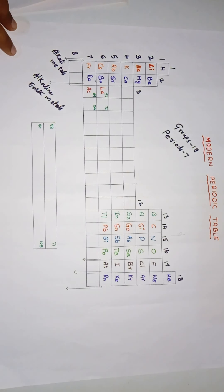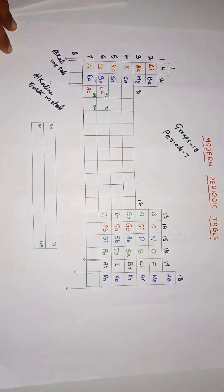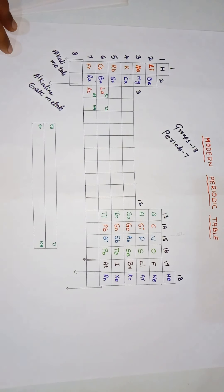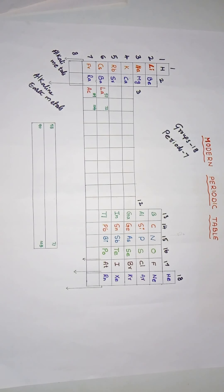Why are they called alkaline earth metals? 'Alkaline' means having a basic nature. Solutions with a pH value greater than seven are called alkaline solutions — meaning they are bases. The alkaline earth metals form the second most reactive group in the periodic table.